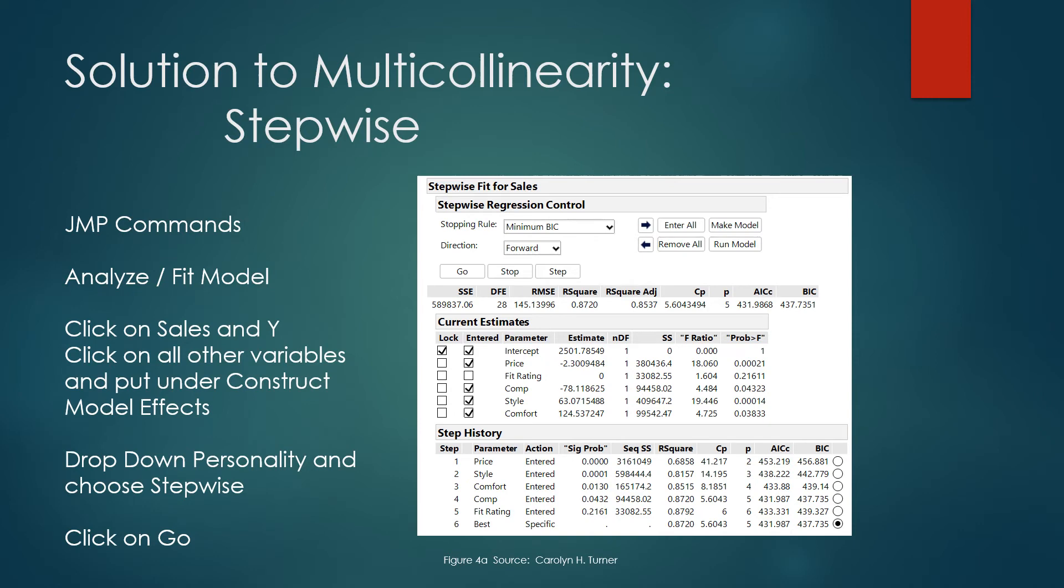So now to read the step history, I have the very first row read left to right. In step one, it brings in price. Price is my single best predictor. If I only used it, r-squared would be 68.58%. Then in combination with price, style comes in. R-squared will go up every time I enter a variable. And so I continue entering all of the variables, even fit rating, but in step six it says your best equation occurs when r-squared is .872. So I back up to step four. That says stop after you enter in competition. So I will be using price, style, comfort, competition, but I will reduce the model and not use fit rating.